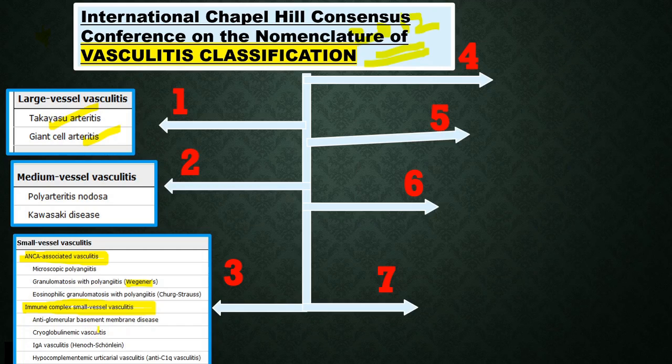Also included are IgA vasculitis and hypocomplementemic urticarial vasculitis. So these are all the three major classifications, which were present in the previous classification as well.